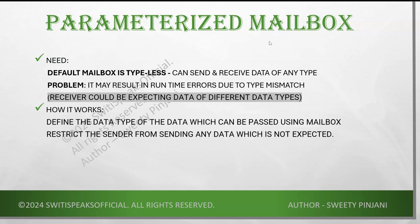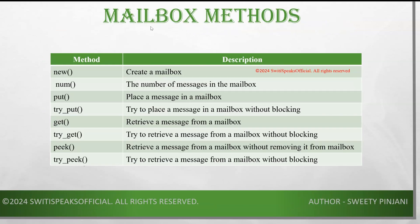Now let's understand the different mailbox methods. The first method is new, which is used to create a mailbox. The second method is num, which tells the number of messages present in the mailbox. put will put a particular message in the mailbox. try_put will try to put a message in the mailbox — it won't block the processes after it, even if it is not able to place the message in the mailbox.